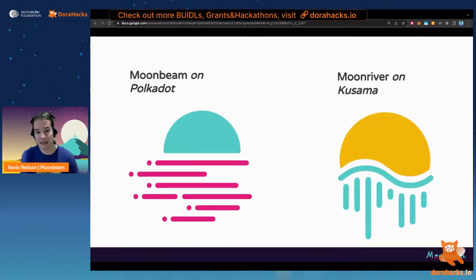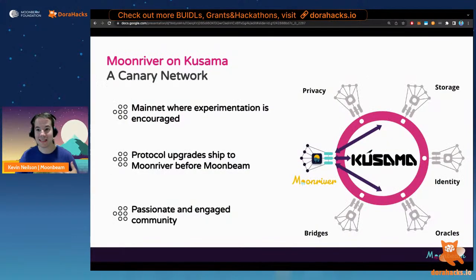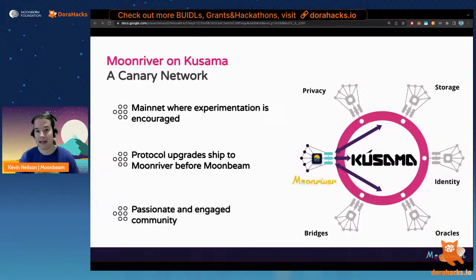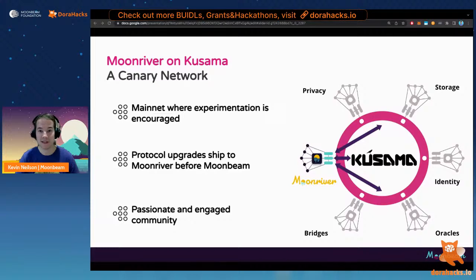All the latest updates roll out first to Moonriver — after validation on internal testnets and the Moonbase Alpha testnet, they move to Moonriver first. This means the latest protocol upgrades, such as when XCM is enabled on Kusama, come to Kusama and then Moonriver first. XCM has been live on Moonriver for quite some time now, and it's coming soon to Moonbeam. This fits really well with the ethos of a hackathon — it's meant to be experimental, pushing boundaries, trying something new and innovating — and Moonriver is the perfect fit.